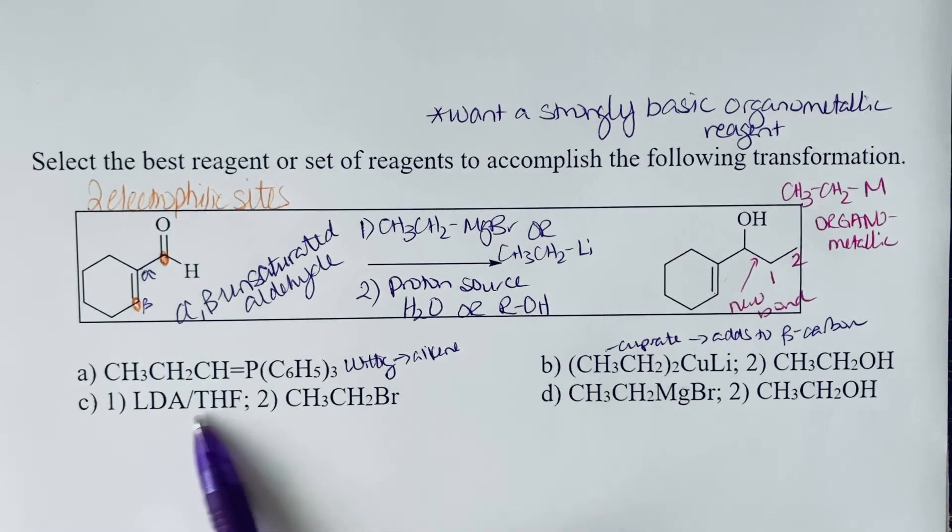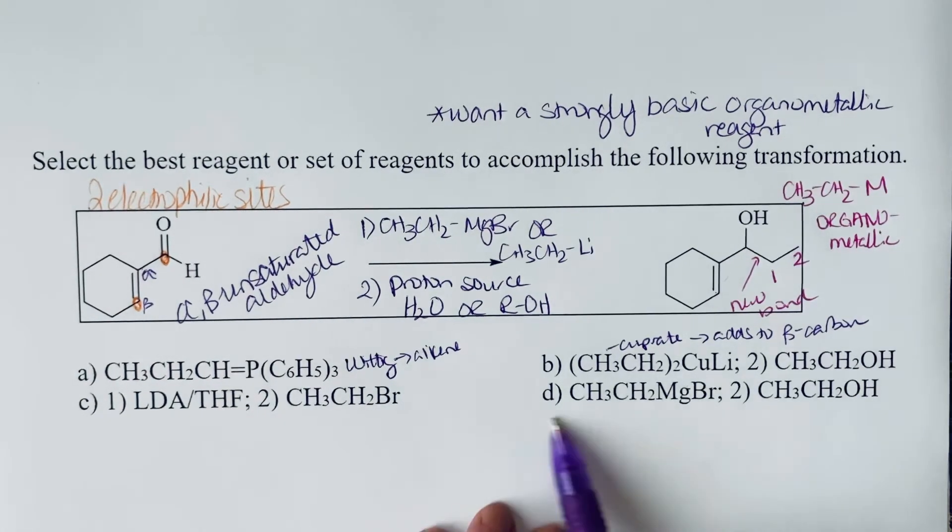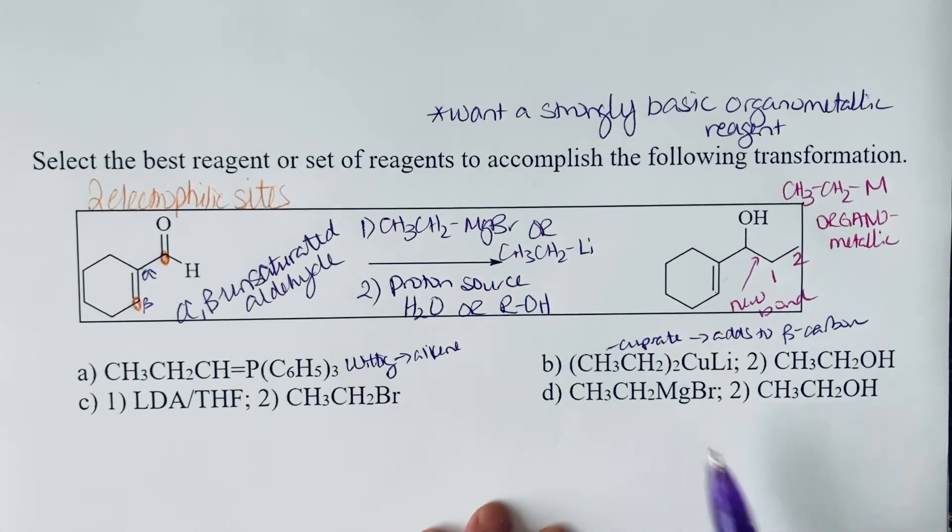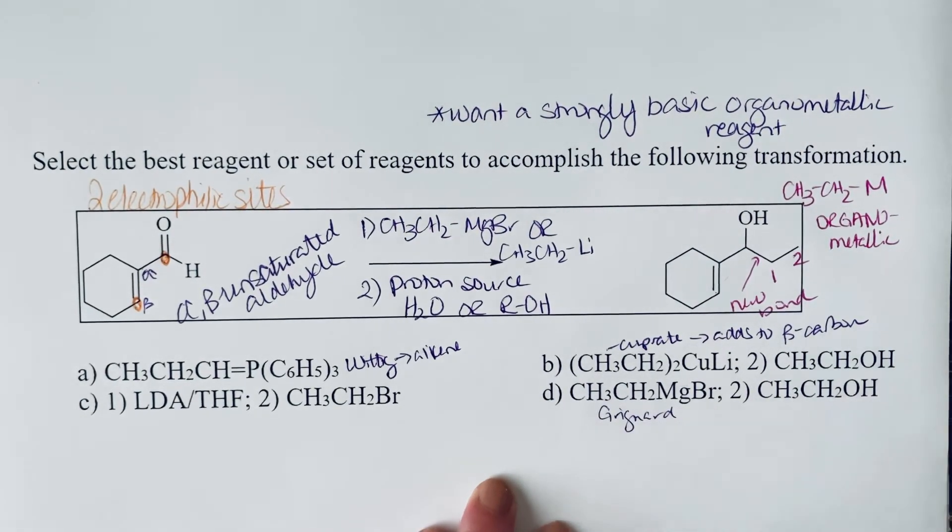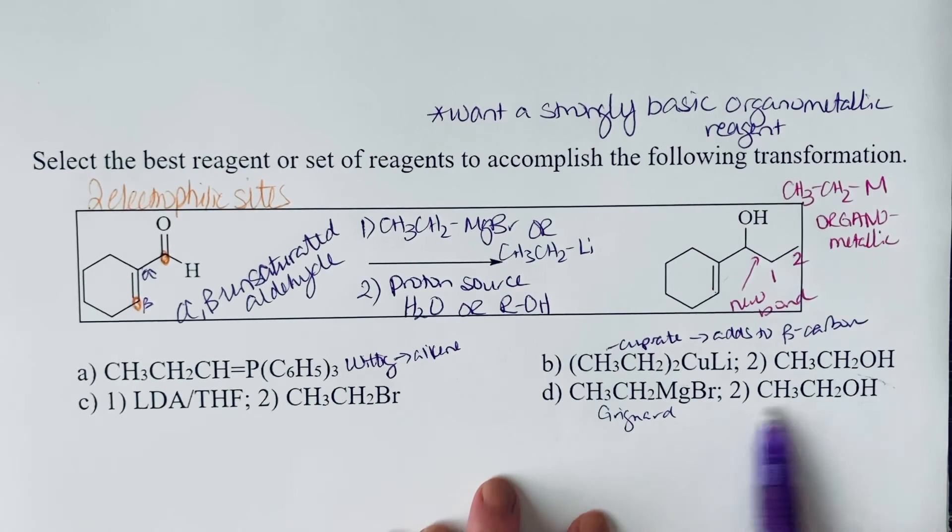C, LDA is a really strong base. We're going to see this used in a later chapter for something completely different. But finally, when we get to D, we see our Grignard reagent and a proton source. So ethanol here is just acting as a source of a proton to put the hydrogen on that alcohol.